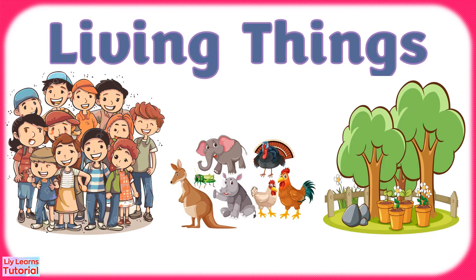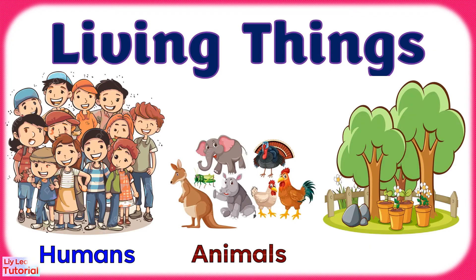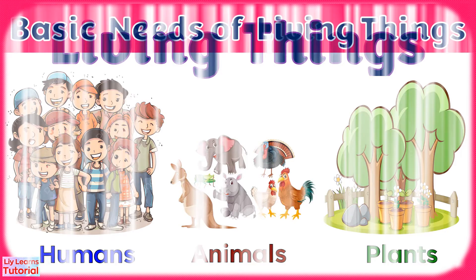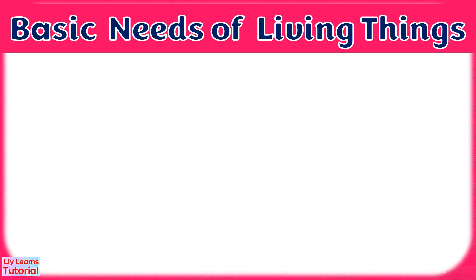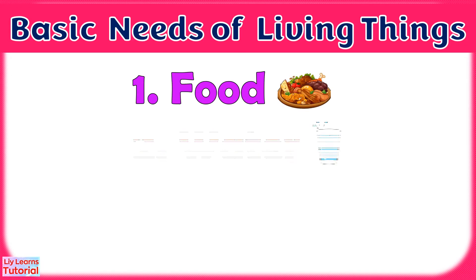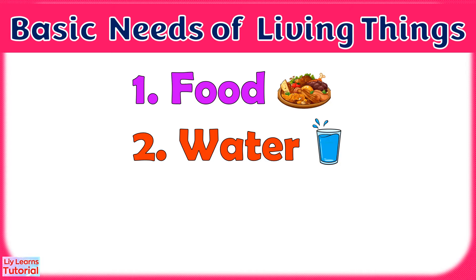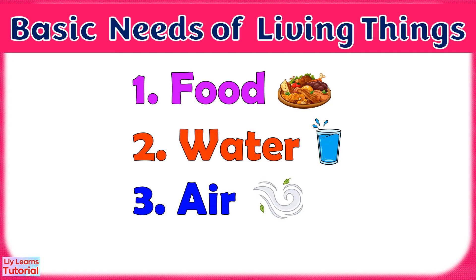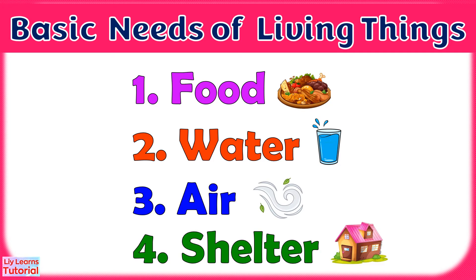Living things like humans, animals, and plants have basic needs in order to survive. The basic needs of living things are food, water, air, and shelter.